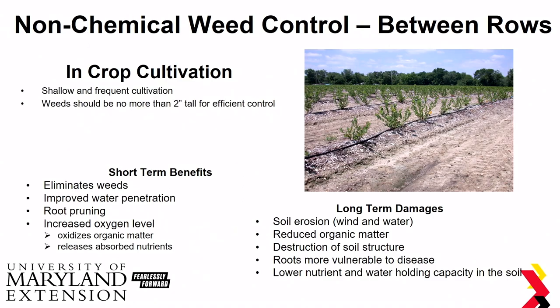Moving into some more active management tactics — looking at non-chemical tactics between rows. Basic in-crop cultivation means doing shallow and frequent cultivation. You really want your weeds to be smaller, about less than two inches tall. A lot of weeds can spread through rhizomes, and once they get bigger than three to four inches tall, they tend to re-root.